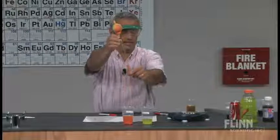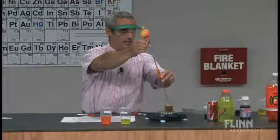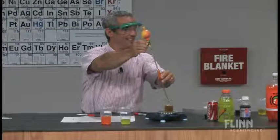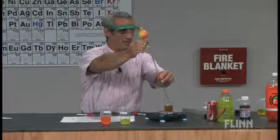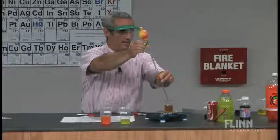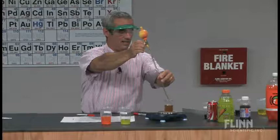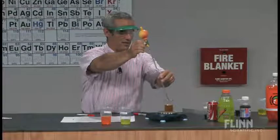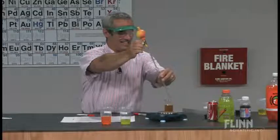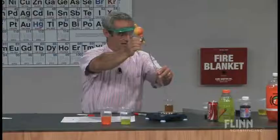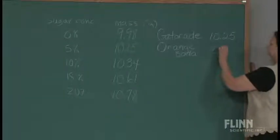Here's my orange soda. I forgot to zero it again — that's okay, we'll do a little subtraction. The scale is now saying 20.75, so the orange soda comes out to be 10.50.